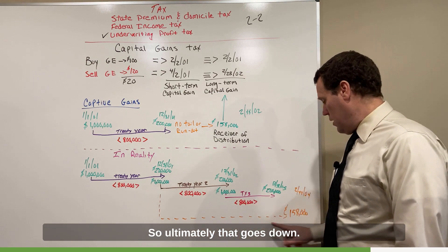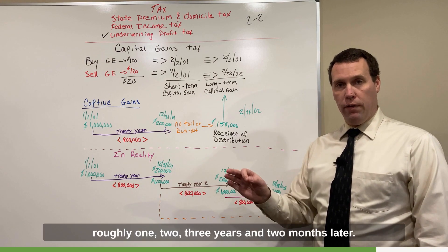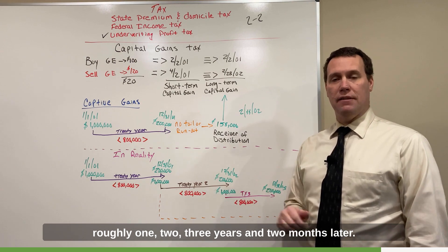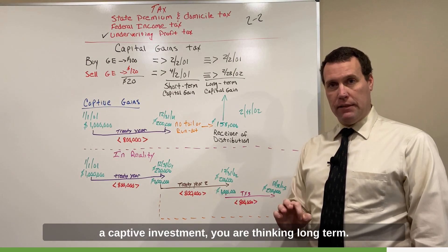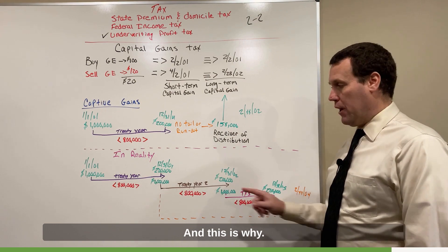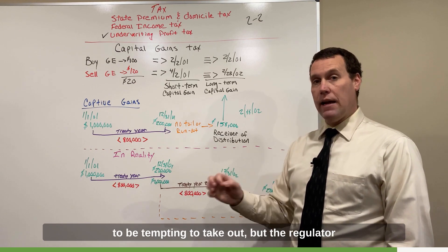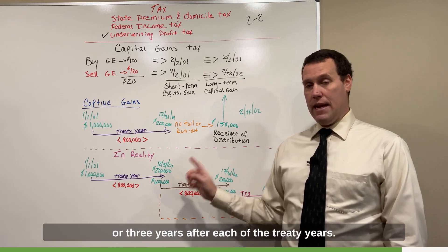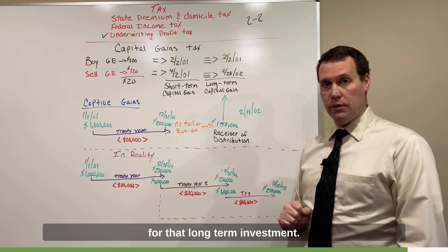Ultimately, you're going to get that $158,000 at some point, roughly one, two, three, three years and two months later. When we say, when you think about a captive investment, you're thinking long term. This is why. Because you are tying up money that it's going to be tempting to take out, but the regulator is not going to allow you generally for two or three years after each of the treaty years. You have to be prepared for that long-term investment.